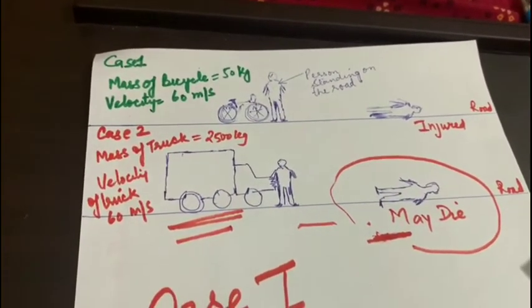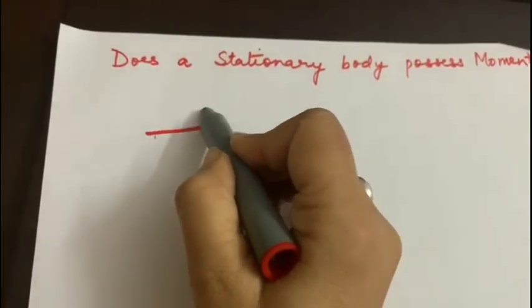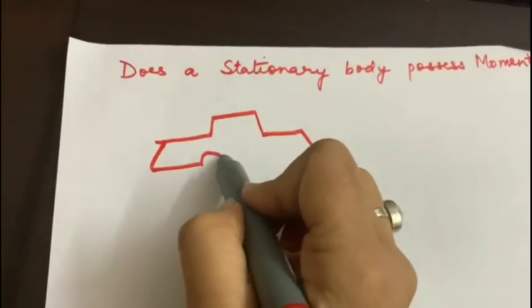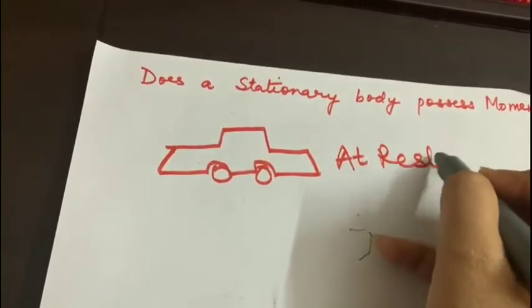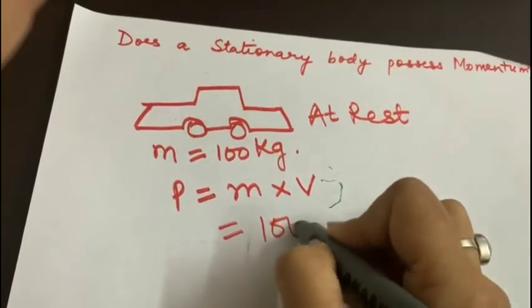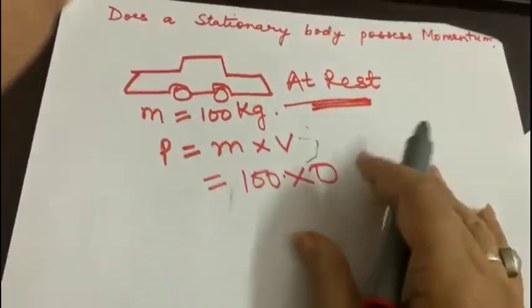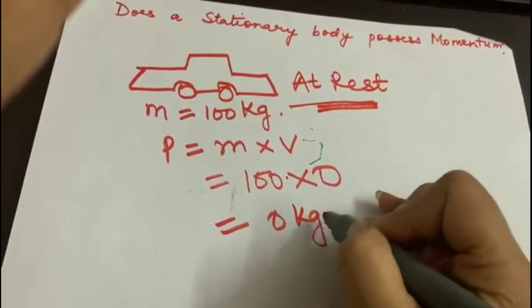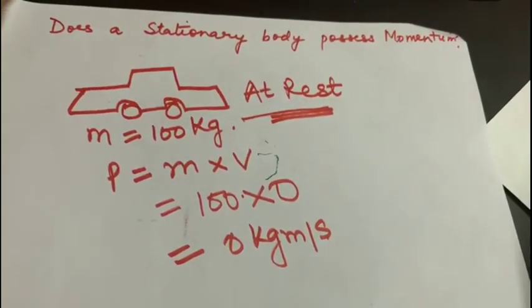Now let's see, there is a question: does a stationary body possess momentum? Let's imagine a car at the rest position. The momentum of the car is P equals M into V, so mass into what is the velocity? Velocity is zero here because the car is at rest. So the momentum will be 0 kg meter per second. If an object is at rest, then its momentum is zero.